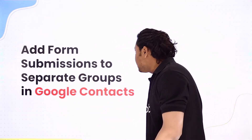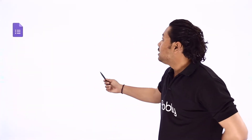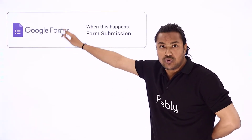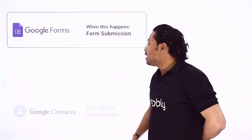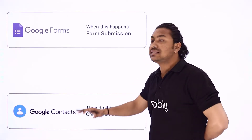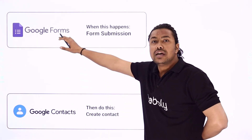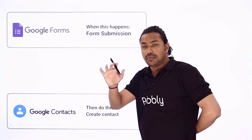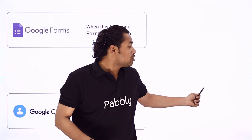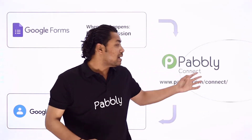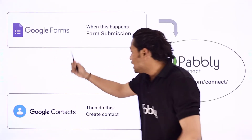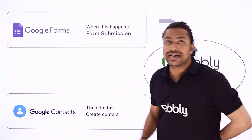Here is what we are going to do: first we will have submissions in our Google Forms, then we will create Google Contacts according to those form submissions. To do this we are going to use Pably Connect, an integration and automation service, which will help us connect Google Forms and Google Contacts together.